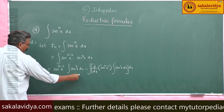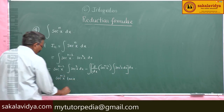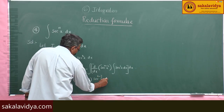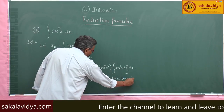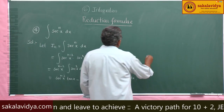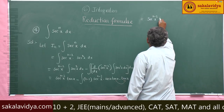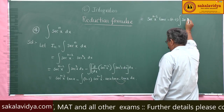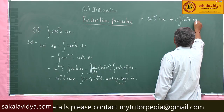This gives tan x times sec^(n-2) x times tan x, minus integral of (n-2) times sec^(n-3) x — the derivative of sec x is sec x tan x — times integral of sec x, which is also tan x, dx. Taking (n-2) common, we get sec^(n-2) x tan x minus (n-2) integral of sec^(n-2) x times sec x times sec^(n-2) x tan²x dx.